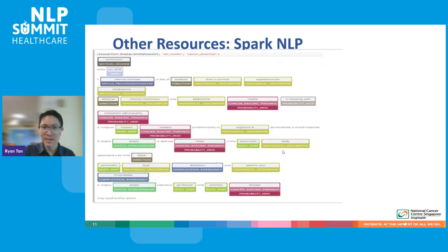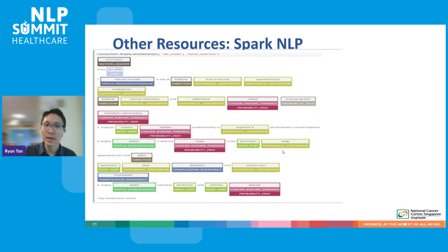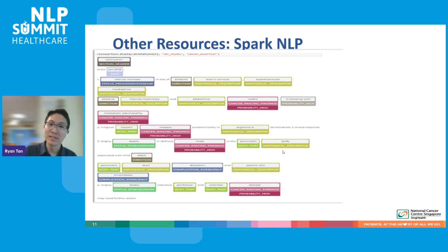You can see a screenshot of this. Spark NLP has its own visualizers, and we found this very useful in the sense that there was quite a lot of pre-trained libraries that we could plug and play and then maybe do a bit of fine tuning. We did fine tune it for categories such as cancer imaging findings, and also the probability or assertion — not just a simple binary assertion, but almost a few classes of probabilities for certain key terms.